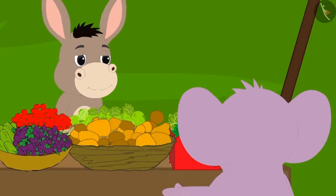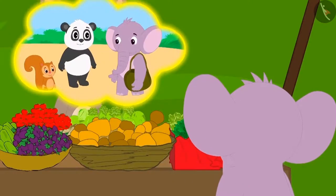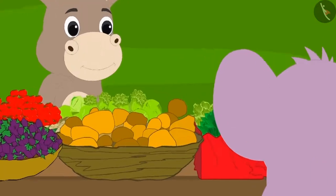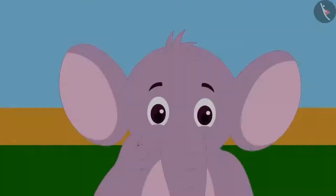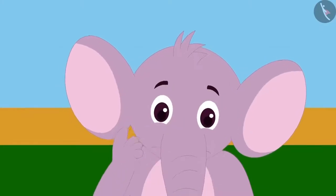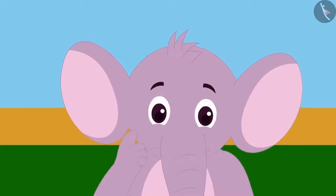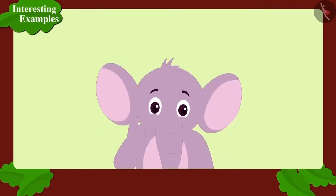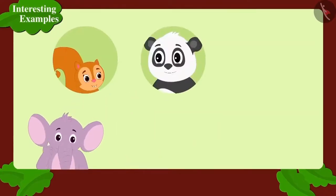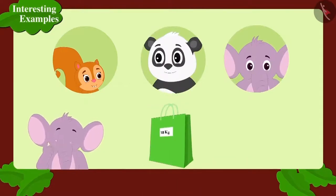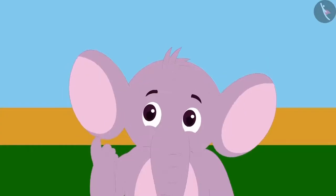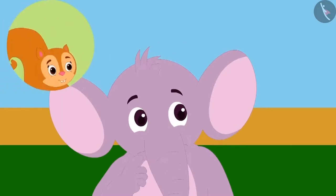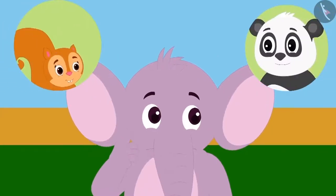When he was buying potatoes from Bola, he remembered that his neighbors, Chanda and Golu, had also asked him to get potatoes from the market. But Appu had forgotten how many potatoes they had asked him to get. Appu bought 18 kilograms of potatoes and thought that he will share the potatoes equally with Chanda and Golu. However, he is not sure how many potatoes he should give to Chanda and Golu.